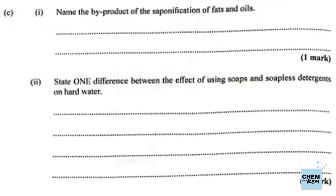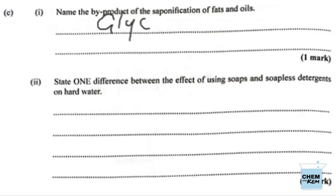Part one of C: name the byproduct of the saponification of fats and oils. Earlier they told us saponification of fats and oils gives us soap — so we cannot say soap here. We'd have to give them the other product. So we'd actually get a special alcohol which is called glycerol. Be sure to check out the link in the description below to the video that breaks down reactions of esters.